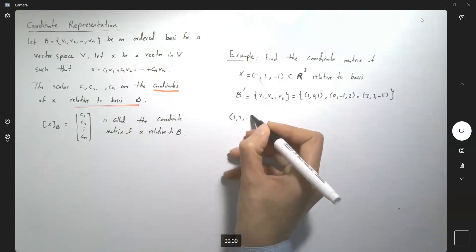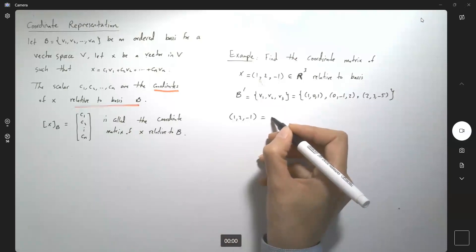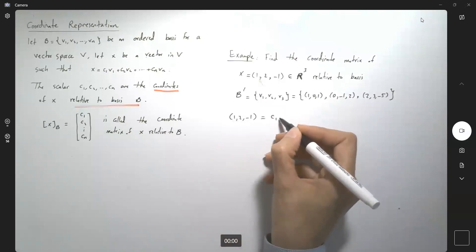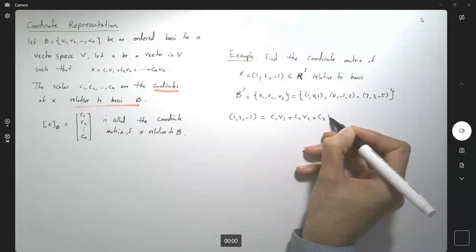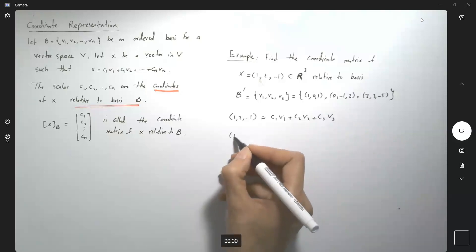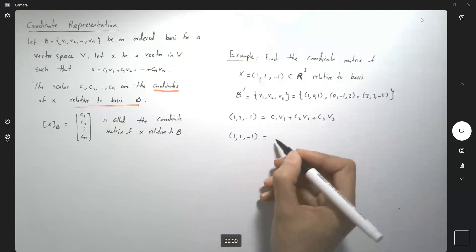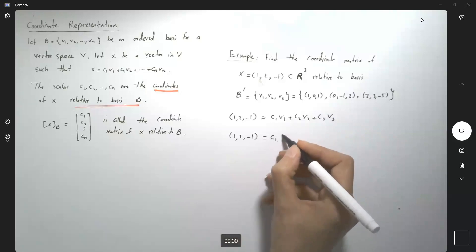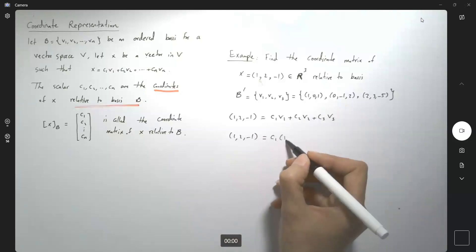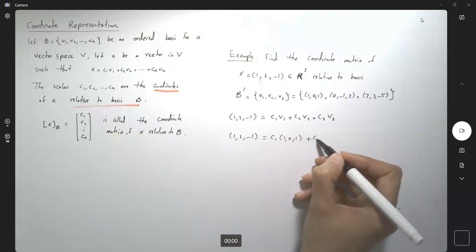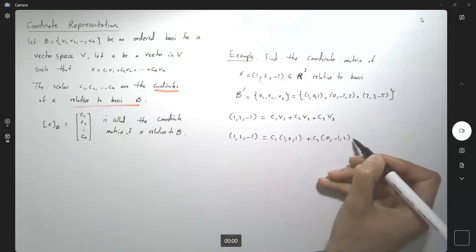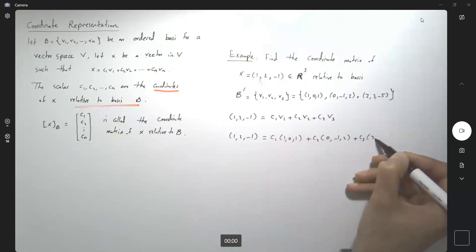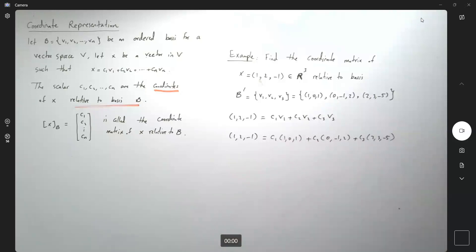x = (1, 2, -1) must be written as c1·v1 + c2·v2 + c3·v3. That is, (1, 2, -1) = c1·(1, 0, 1) + c2·(0, -1, 2) + c3·(2, 3, -5).